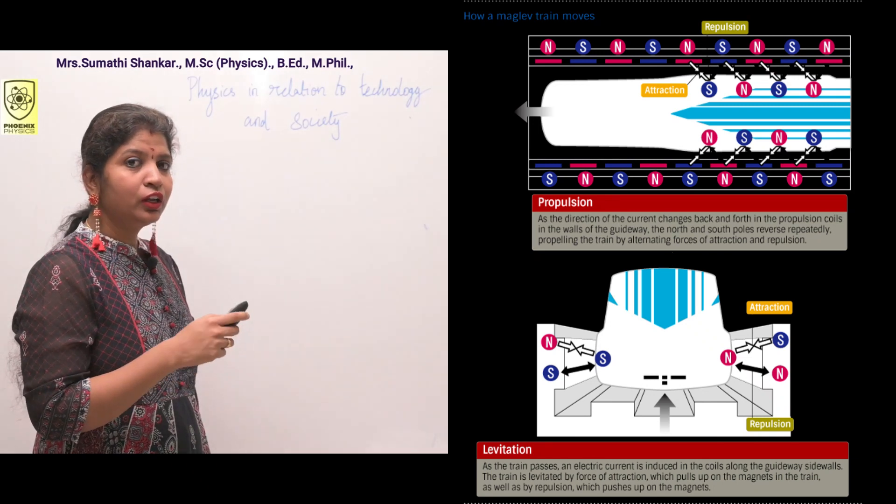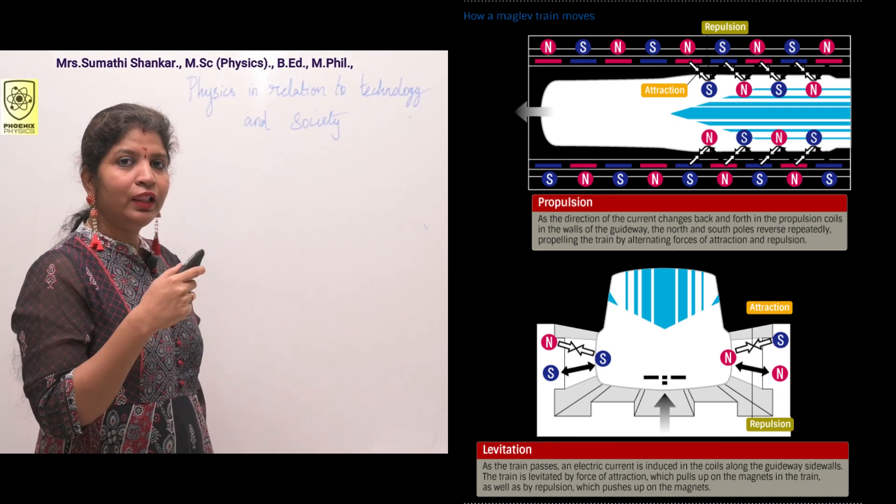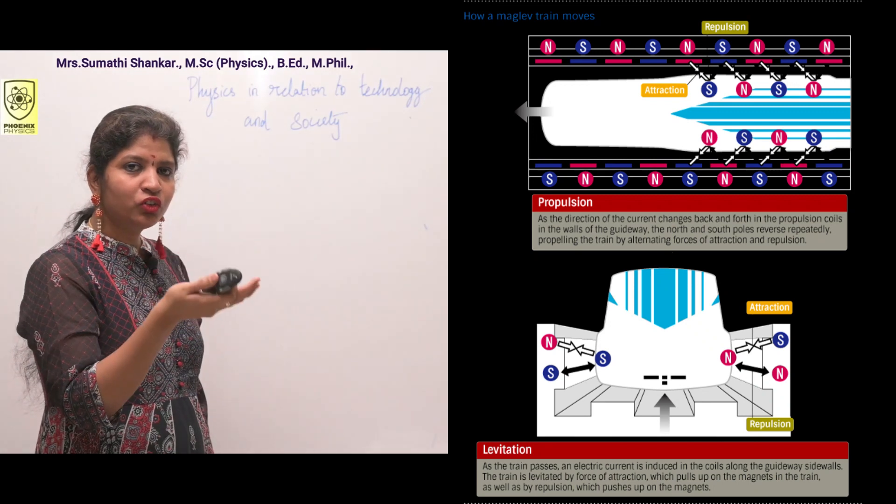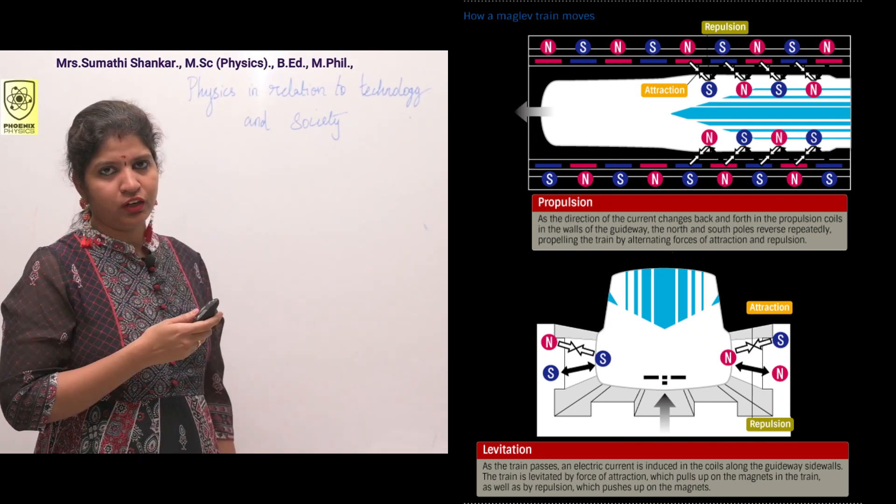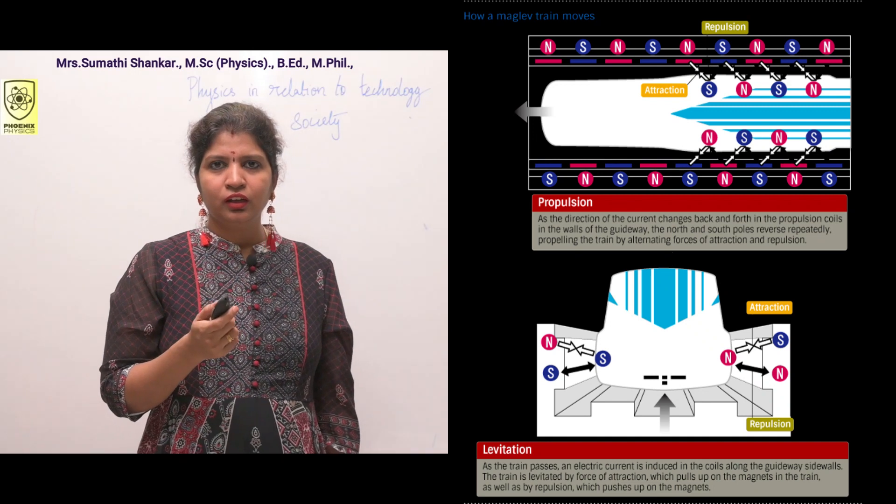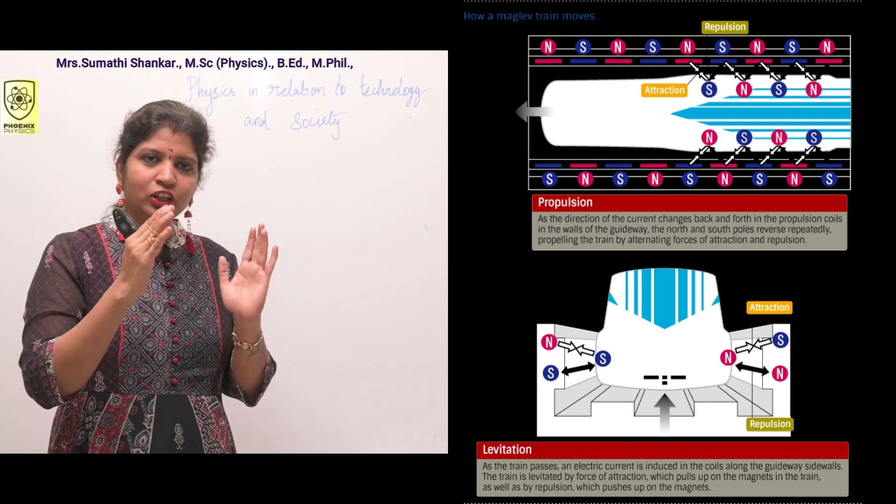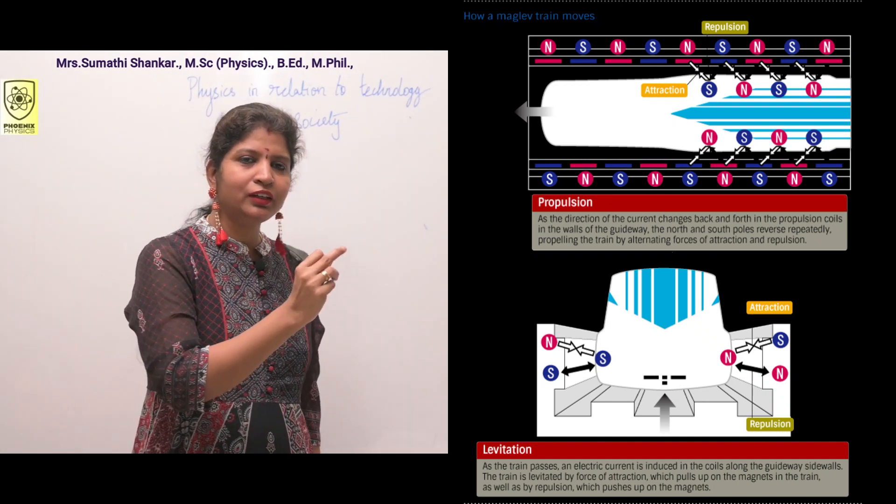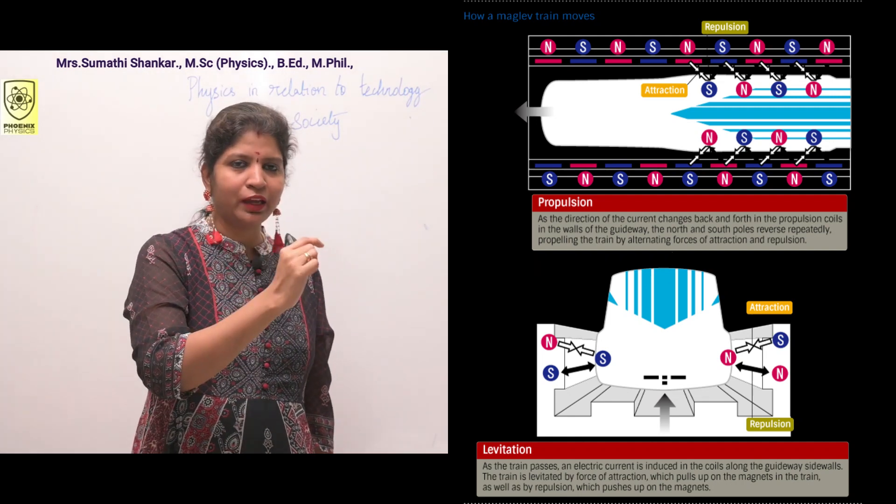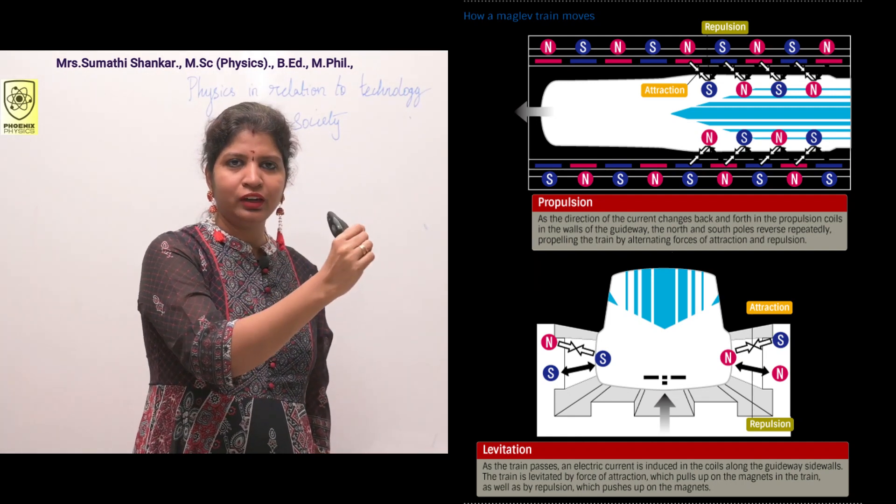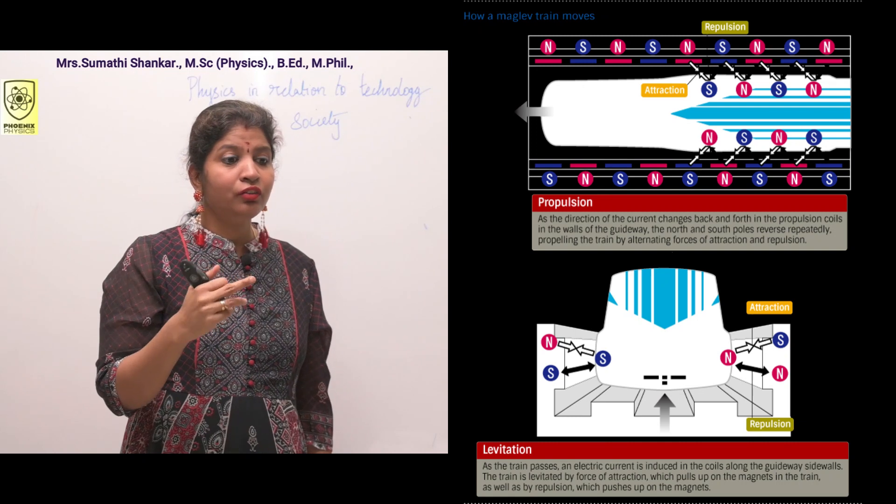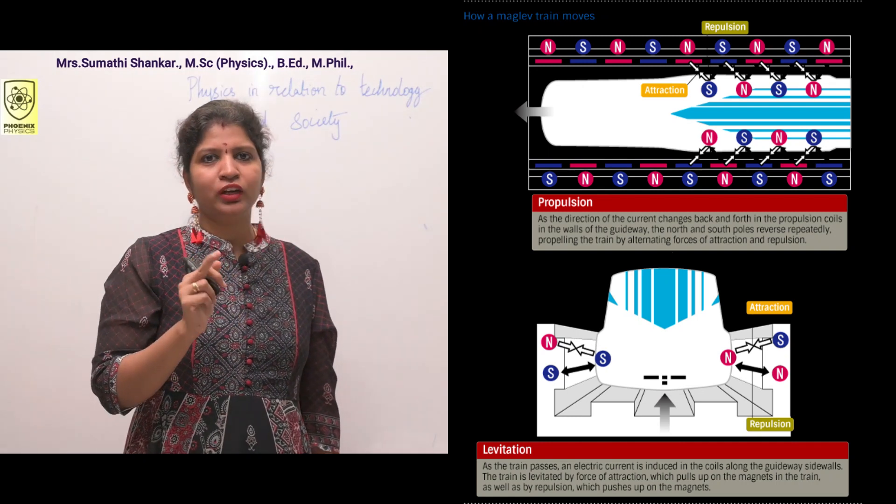One important application of superconductivity is superconducting magnets have been used to levitate trains above their rails. Have you heard about Maglev train? It's short form of magnetic levitation train - mag for magnetic, lev for levitation. Maglev train or we can say bullet train.